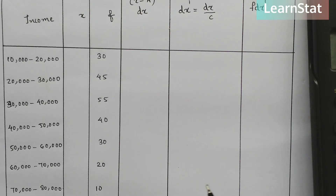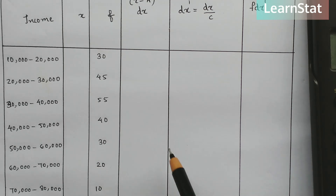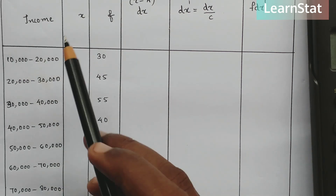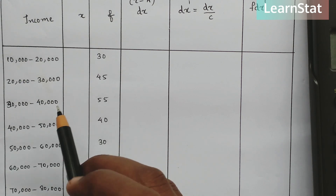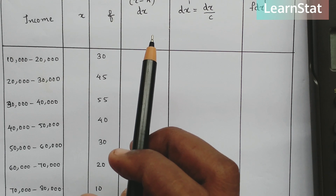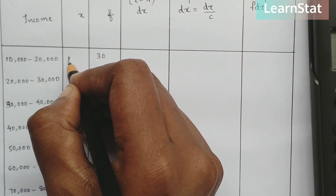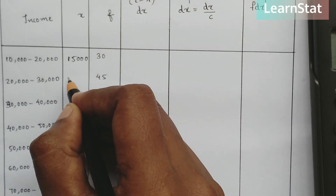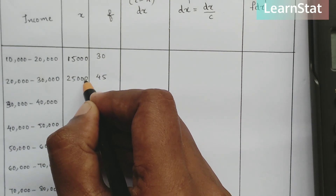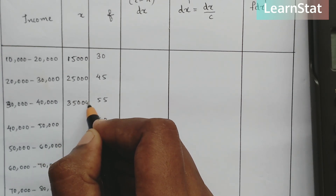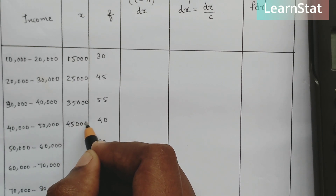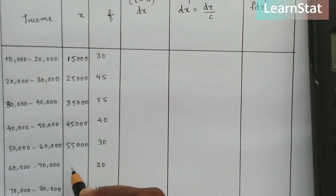For the class interval 10,000 to 20,000, the mid-x is calculated as lower limit plus upper limit divided by two: 10,000 plus 20,000 is 30,000, divided by 2 equals 15,000. The subsequent mid-x values are: 25,000, 35,000, 45,000, 55,000, 65,000, and 75,000.